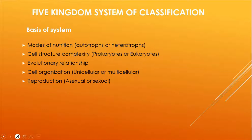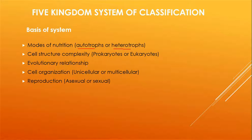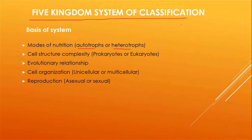This system is based on some important scientific criteria. The first is mode of nutrition — whether organisms are autotrophs or heterotrophs. The second is cell structure complexity — whether they are prokaryotes or eukaryotes. The third is evolutionary relationship — how they branch off from prokaryotes. Then cell organization — whether they are unicellular or multicellular — and reproduction — whether they reproduce asexually or sexually.